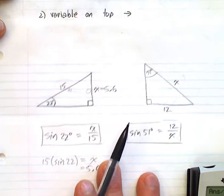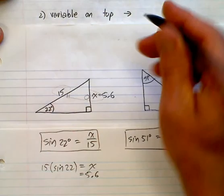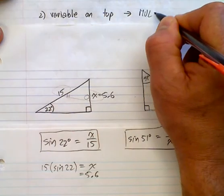All right, that's one type of method where the variable is on the top. And if the variable is on the top, what we do is we multiply.